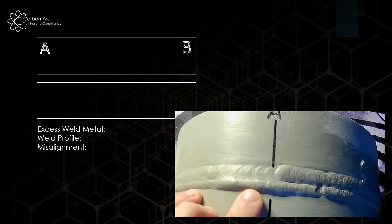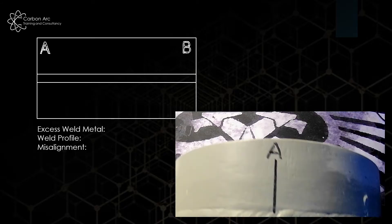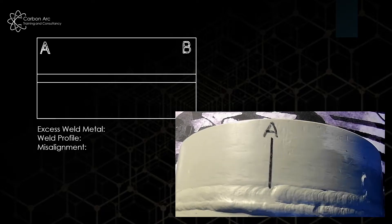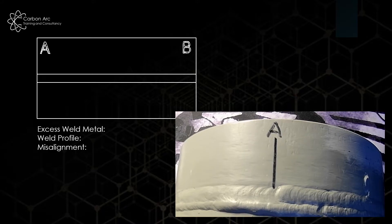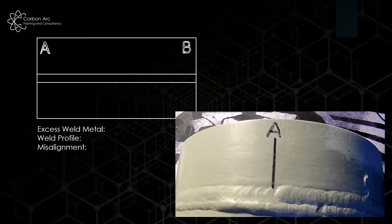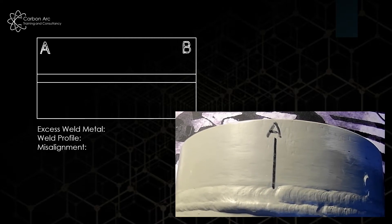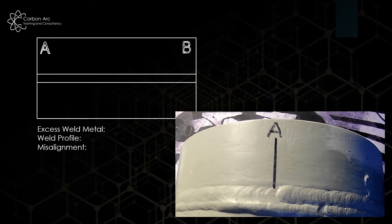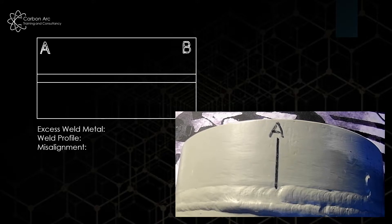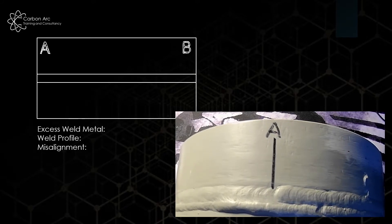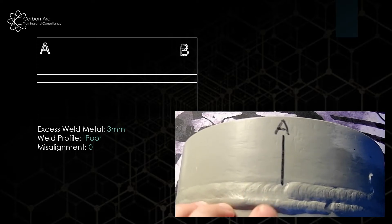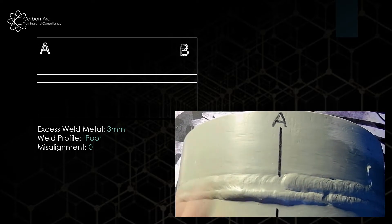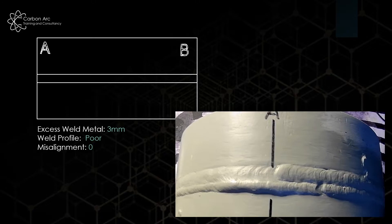And then your misalignment between your pipes. If you want to learn and you haven't used a weld cam gauge before, you can have a look in our video above here now. That will go through how to take those measurements and the pros and cons of using the cam gauge to make sure you get the most accurate measurement you can. So I'm just going to fill in those details there. I've got a 3mm cap height, a poor profile, and no misalignment in my pipe as it stands.